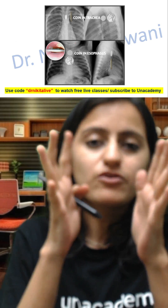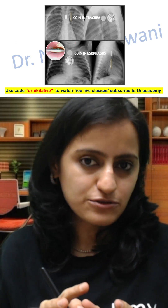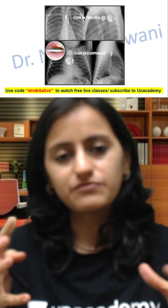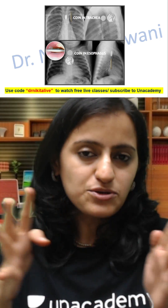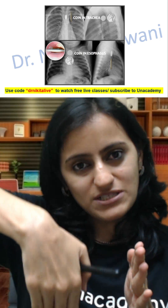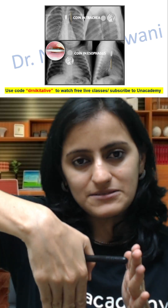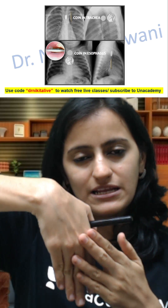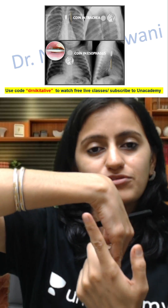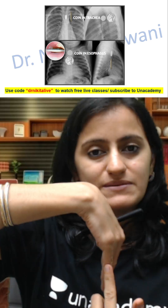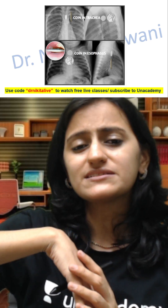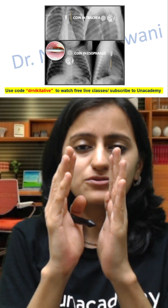Let us first understand this concept. When a coin goes into the esophagus, the esophagus is a muscular structure so it expands and the coin goes straight. When you take an AP view the coin will be rounded, and when you do the lateral view the coin will be slit-like.